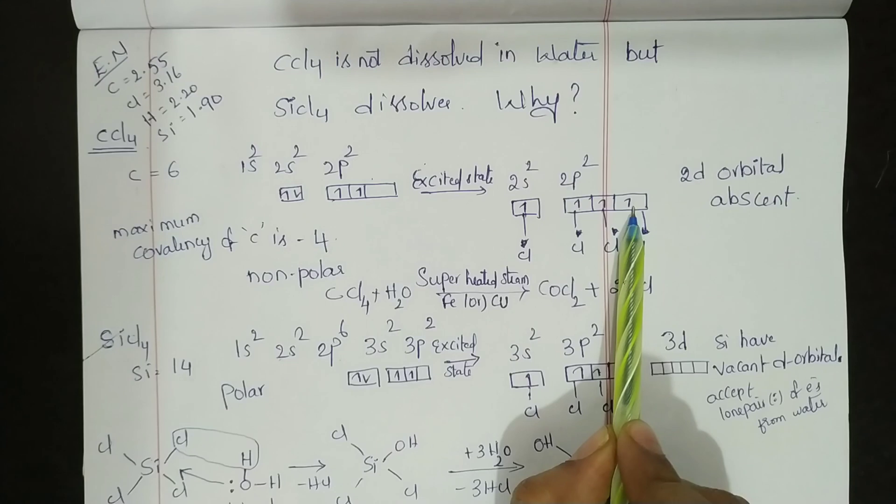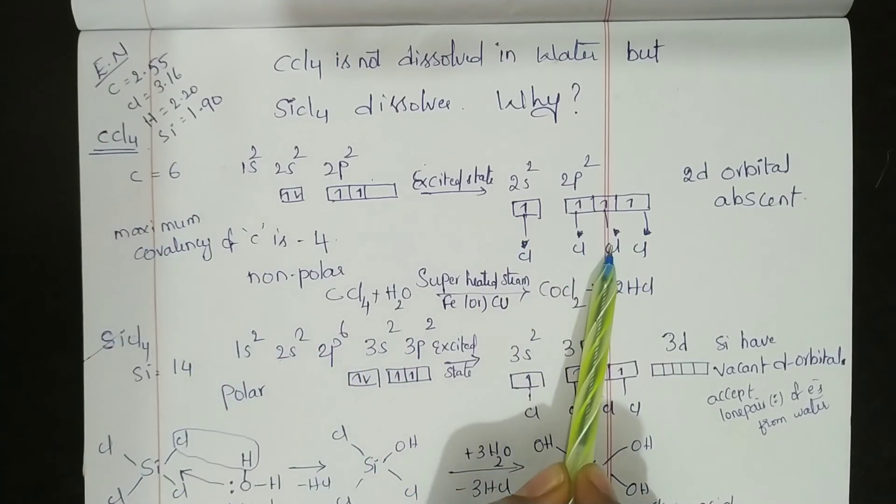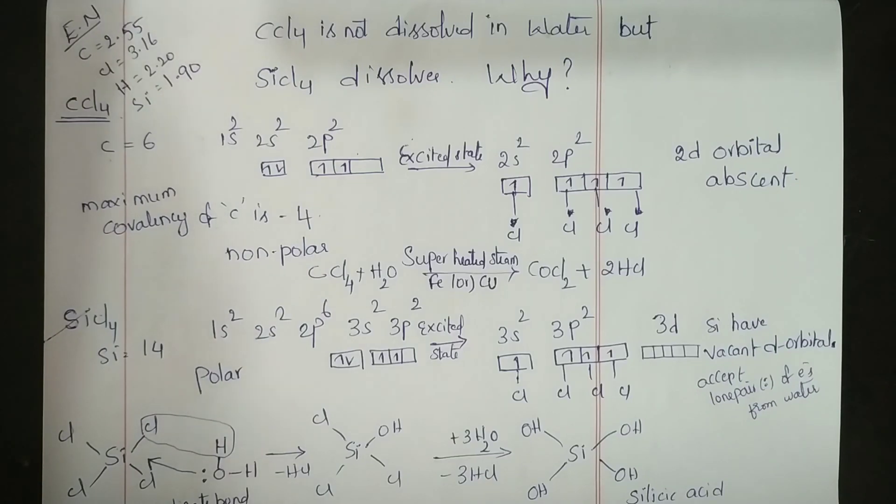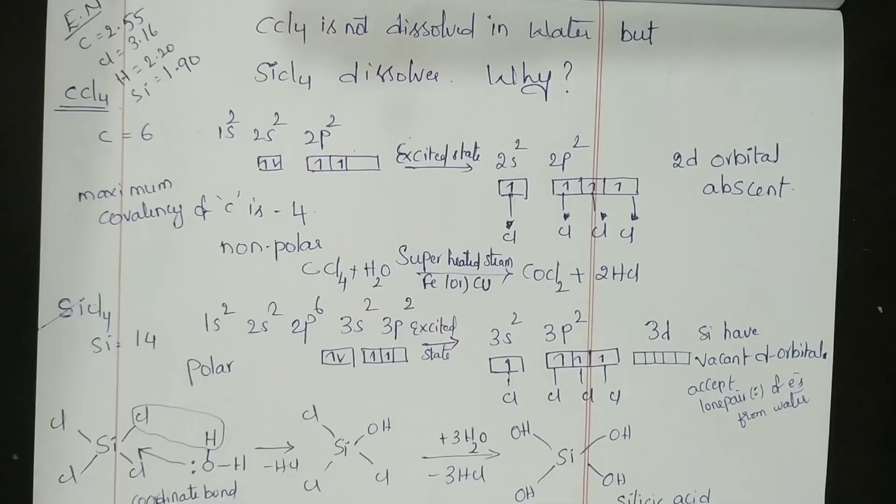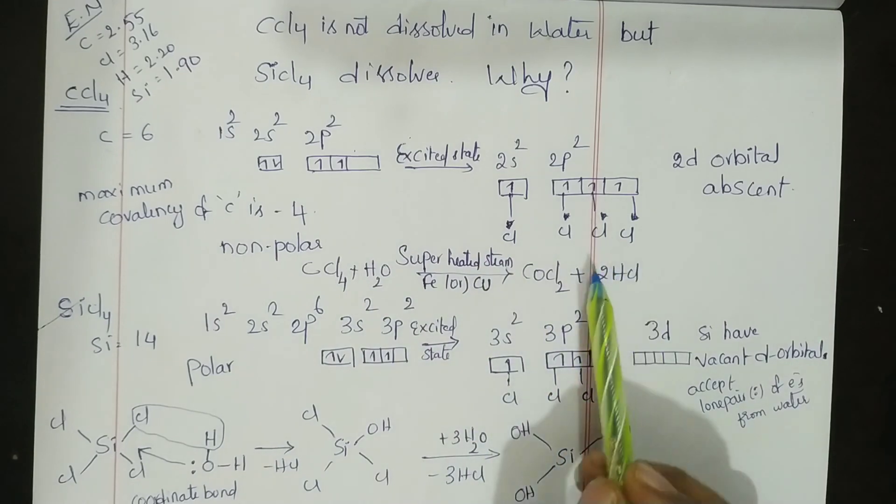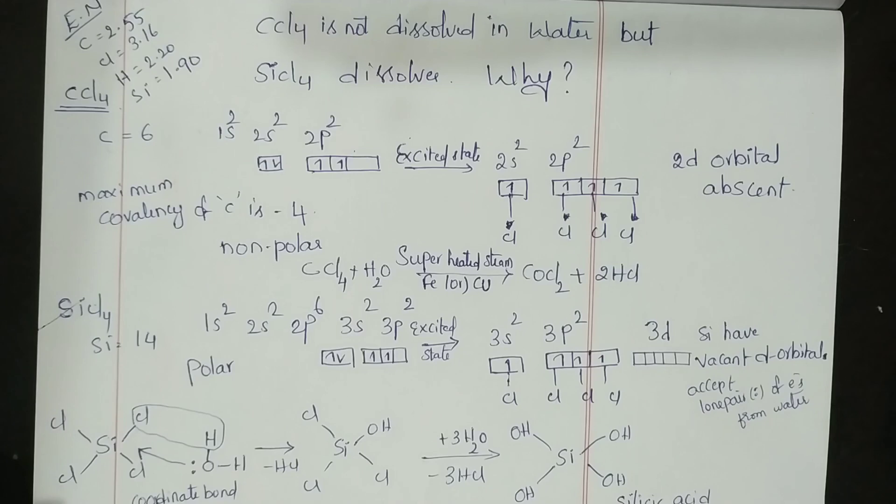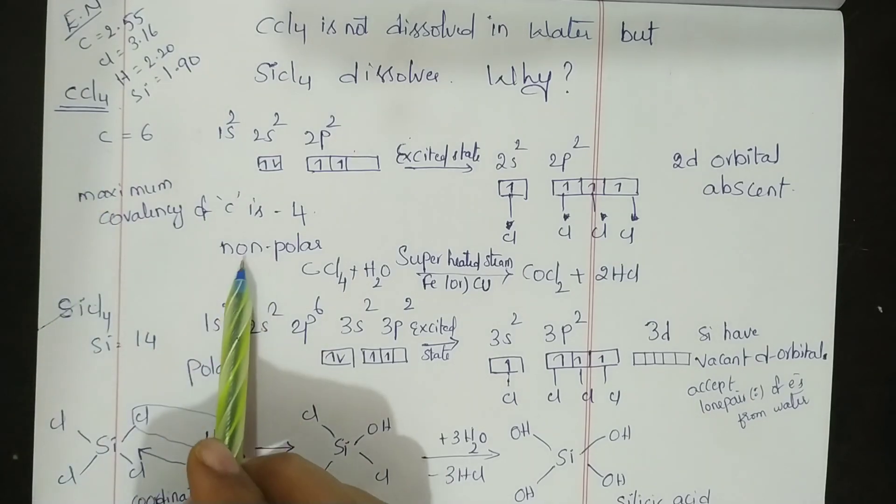These four lone electrons react with four chlorine atoms and form CCl4. In the carbon atom, d orbital is absent. Due to absence of d orbitals, CCl4 is not dissolved in water.